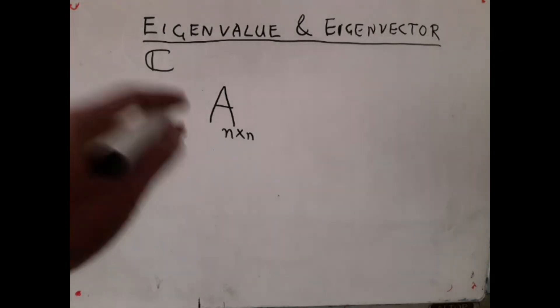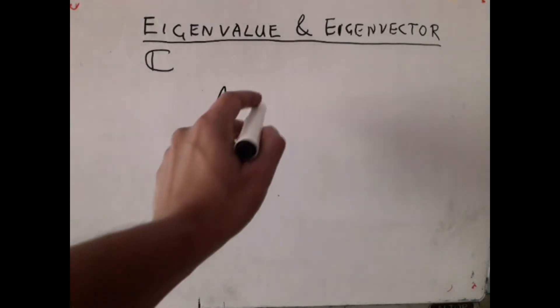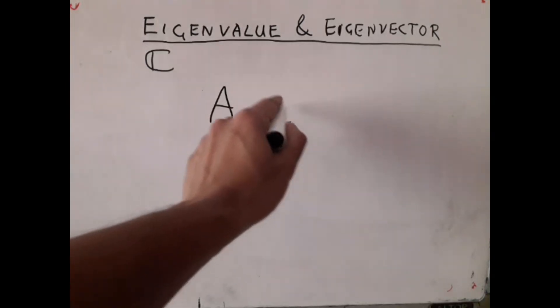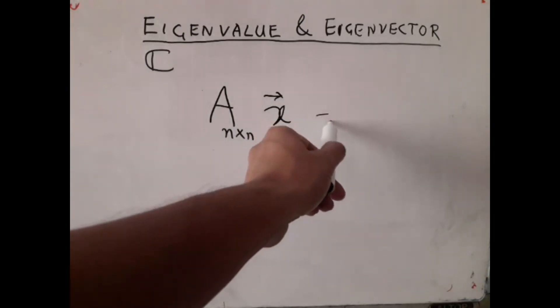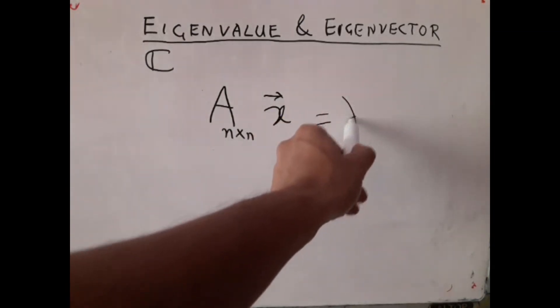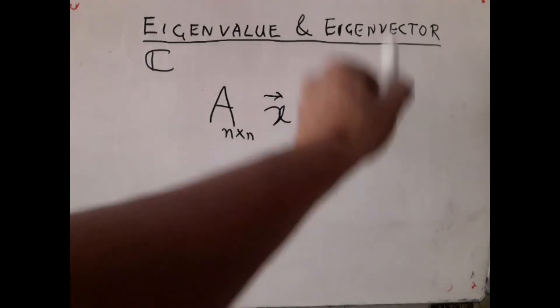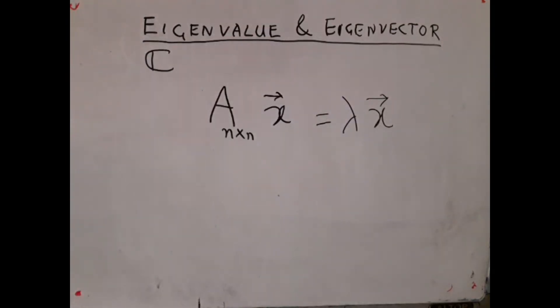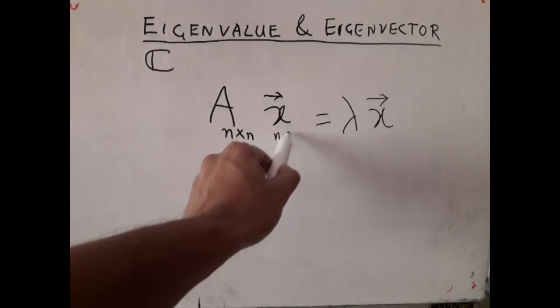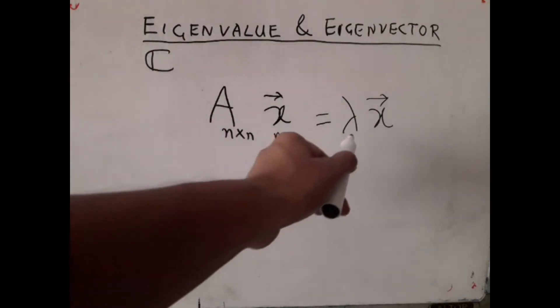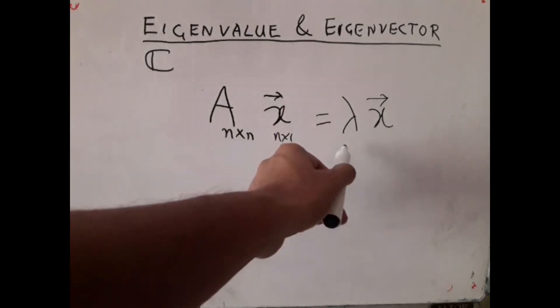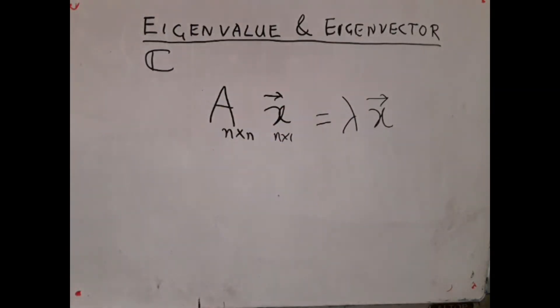And I want to find out solution to equations like this. I want to multiply a vector X with A, and the result I expect to be this. Here, this is an n by 1 vector. All entries are complex. Similarly, this is a scalar, a complex number, and this is the same X.